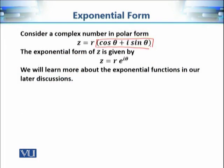If we are given a complex number in polar form, then by Euler's formula, the expression cosine theta plus iota sine theta is basically e raised to power iota theta. So the exponential form of a complex number becomes Z is equal to r times e raised to power iota theta. We will learn more about these exponential functions in our later discussions.